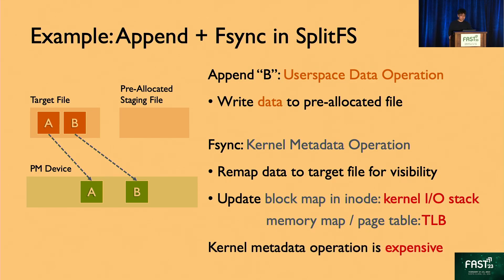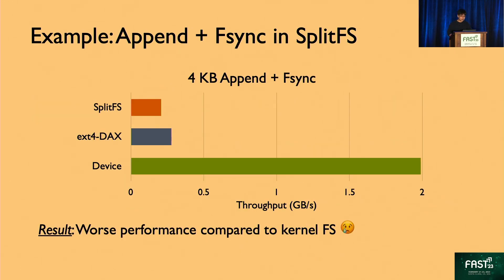The kernel metadata operation is expensive. Updating the block map needs to go through the kernel I/O stack with inefficient metadata journaling. And changing the page table involves page fault and TLB shootdown. Block map updates are also not friendly to huge pages, since they may break contiguous blocks. As a result, for 4KB append with fsync, SplitFS turned out to have worse performance compared to the underlying kernel file system, ext4dax.